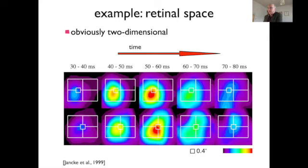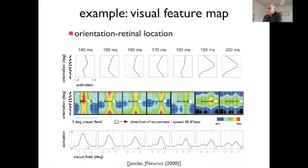I gave you the example of neural data where retinal space was represented by a population of neurons, and a peak is localized in two dimensions evolving in time. These spaces can also be combined to represent different qualities along different axes — we call those feature maps.